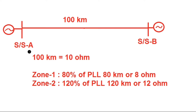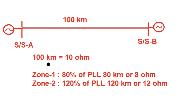Consider that substation A and substation B are connected via a single circuit transmission line of 100 kilometers. Both substations have a source, and distance relays are provided at both ends for protection. For ease of understanding, 100 kilometers equals 10 ohm impedance. Zone 1 is set at 80% of the line length — 80 kilometers or 8 ohm — from each end.